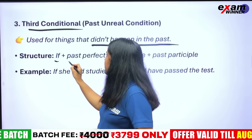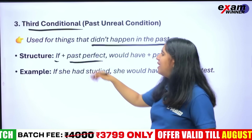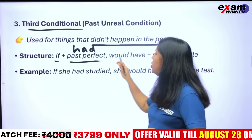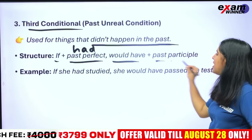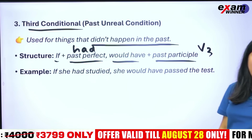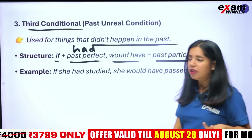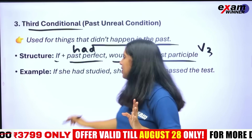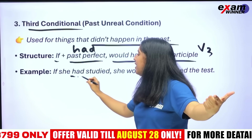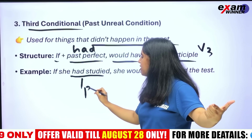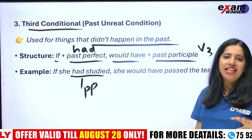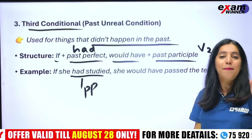In the third condition, the if part uses past perfect. For example: 'if she had studied' — 'had studied' is past perfect. The main part uses would have plus past participle.